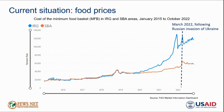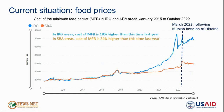Following the price increase, staple food prices declined again in April alongside the start of the truce and the resultant appreciation of the currency in both IRG and SBA areas. However, since then, staple food prices have been trending upward again in IRG-controlled areas, driven in part by depreciation of the currency and also traders' reluctance to decrease prices despite declining global prices in order to preserve profit margins. As of October 2022, the cost of the minimum food basket was 18% higher than the same time last year in IRG-controlled areas and 24% higher in SBA-controlled areas.